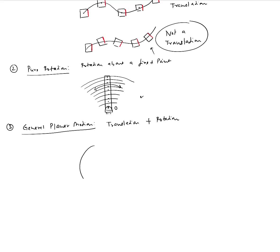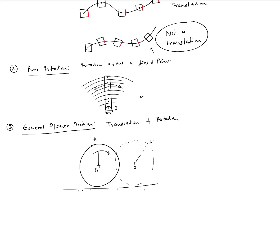Let me give another example. Let's say I have a wheel and this wheel is rolling on a flat surface. As it rolls, if you look at a line — say point O at the center and point A on the rim — after the wheel has moved, point O is here and point A has moved from here to A prime. Clearly the line OA has changed its orientation from vertical to something at an angle. There is a change in orientation, meaning there is rotation involved. But at the same time, there is translation as well because there is no fixed point — point O itself has velocity. So this is the case of a general planar motion.